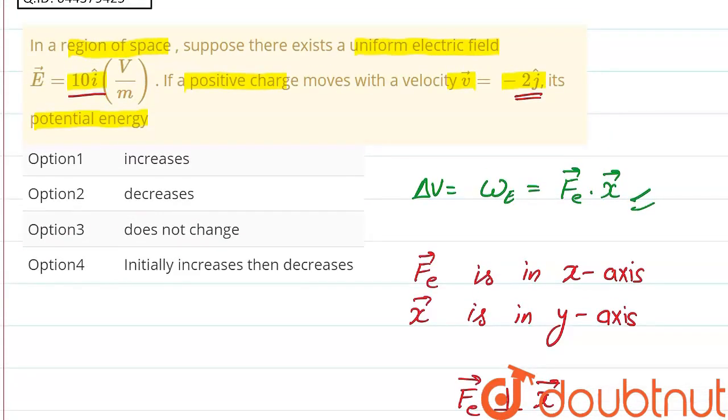So option three is correct, that is, the potential energy does not change. This is our solution, thank you for watching.